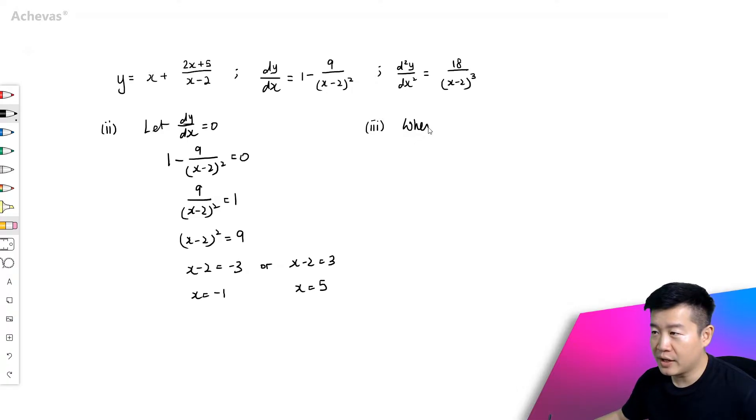So when x is equal to minus 1, let's check what is the value of d square y dx square. This is 18 over minus 1 minus 2 to the power of 3. d square y dx square is going to be equal to minus 2 over 3, and this is less than 0, so we are talking about a maximum point here.